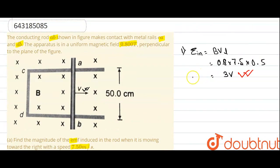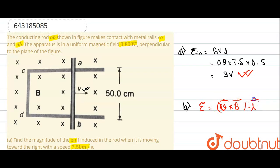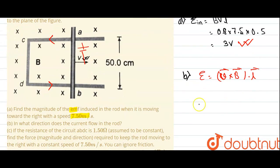Now, in which direction will the current flow? The cross product for EMF will be V cross B dot L. If you do V cross B, you will find that the higher potential is in the upward direction and the lower potential is in the downward direction. So current will flow in the anti-clockwise direction.